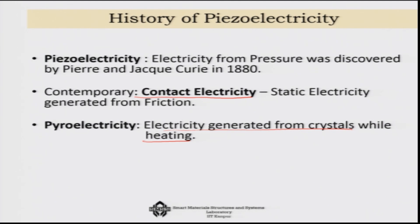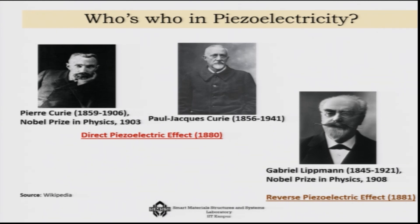The Curie brothers, Pierre and Jacques Curie, in 1880 found out that pressure can also generate charge. The word for pressure in Greek is 'piezo', so they gave this phenomenon a new name: since the source of electricity is pressure, it is piezoelectricity. That is how the term piezoelectricity was coined. This direct piezoelectric effect was discovered by Pierre A. Curie and Jacques Curie.